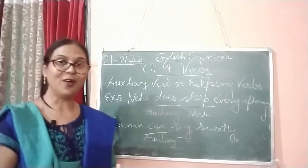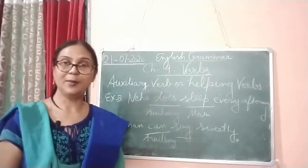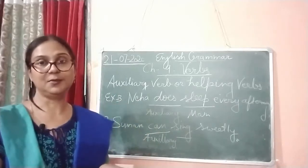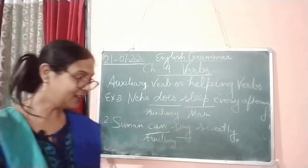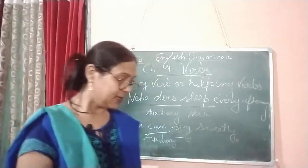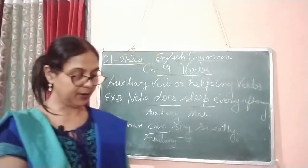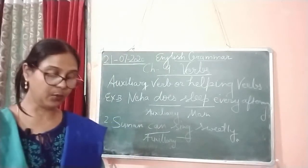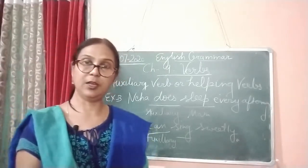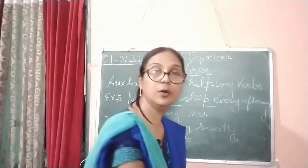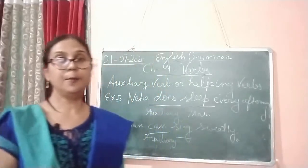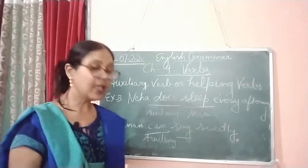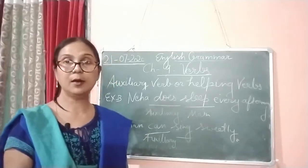Now we are going to solve some exercises based on these two concepts. This is exercise number F, and you can find it in your Mastering Grammar book, page number 53. So take out your Mastering Grammar book, page number 53, and find exercise F.